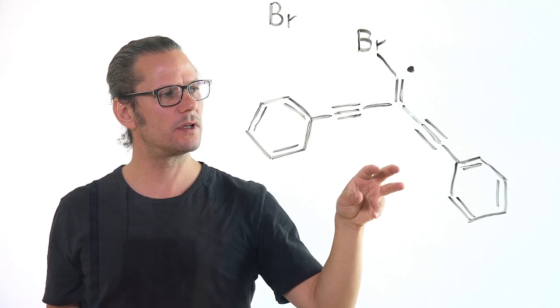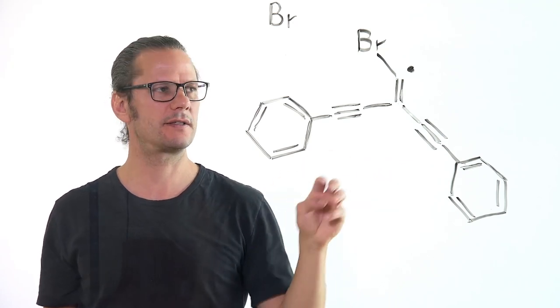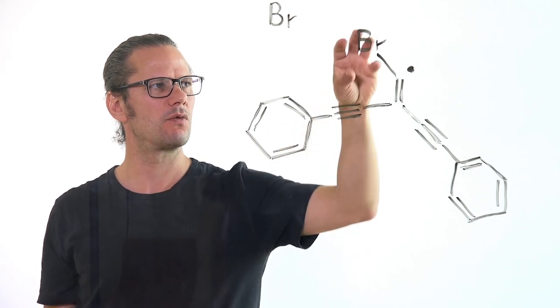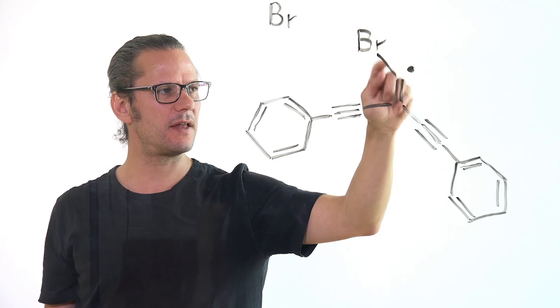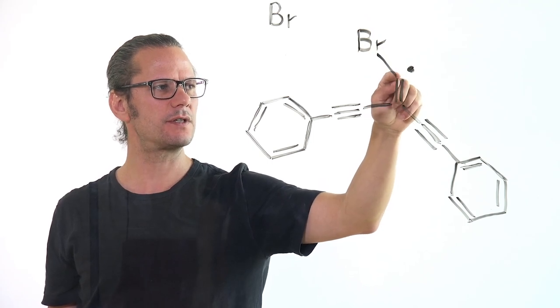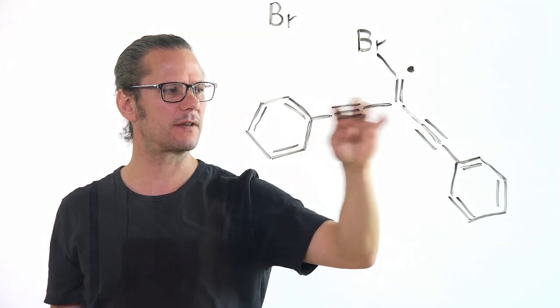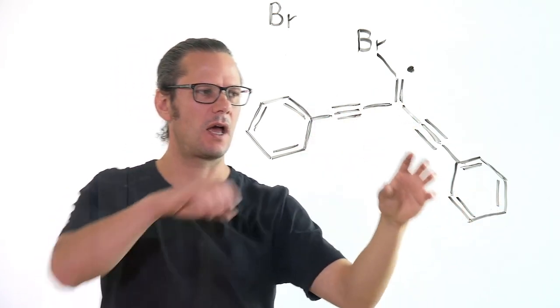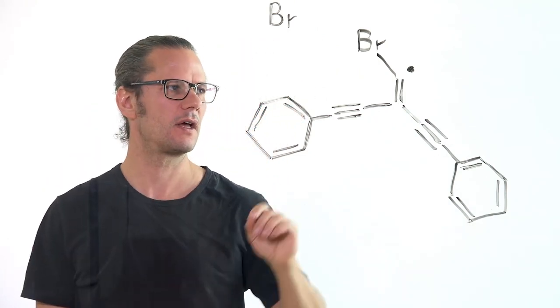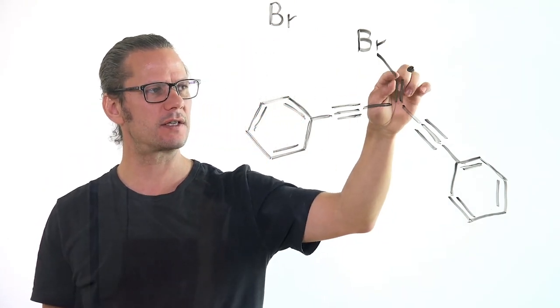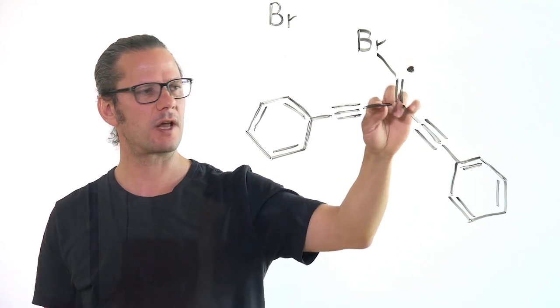And now we will induce a second reaction step which is the skeletal rearrangement. We will detach now the second bromine. And then the carbon that sits in this position will move into the linear chain connecting these two phenyl rings. And this will lead to a straight linear chain. And with this we change the connectivity of this carbon atom that was before outside the chain into the chain.